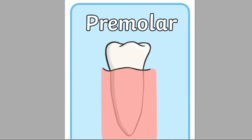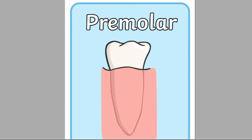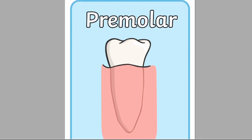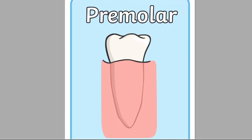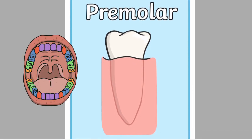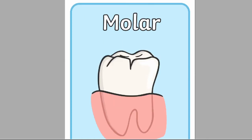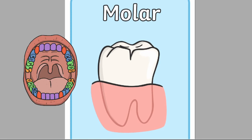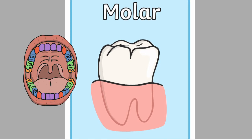Premolars and molars are towards the back of your mouth. These are bigger and wider than incisors and canines, and this is because of what they do. Premolars are used for holding and crushing food, and at the very back of the mouth are the molars. These are the bigger versions of premolars that chew and grind up food, working with your tongue to prepare food for swallowing.